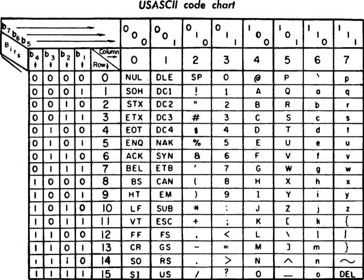Before ASCII was developed, the encodings in use included 26 alphabetic characters, 10 numerical digits, and from 11 to 25 special graphic symbols. To include all these, and control characters compatible with the Comité Consultatif International Téléphonique et Télégraphique International Telegraph Alphabet No. 2 standard of 1924, FIELDATA, and early EBCDIC, more than 64 codes were required for ASCII.